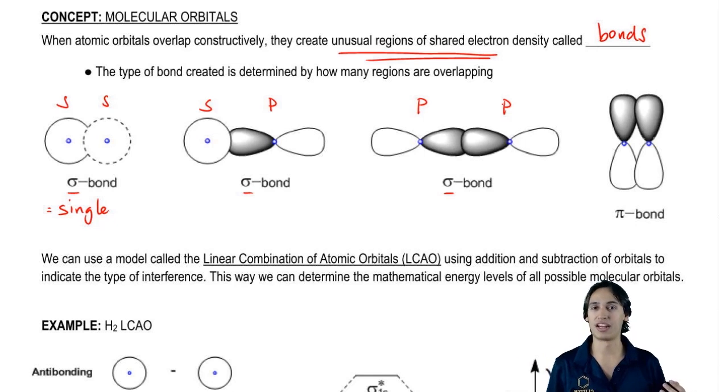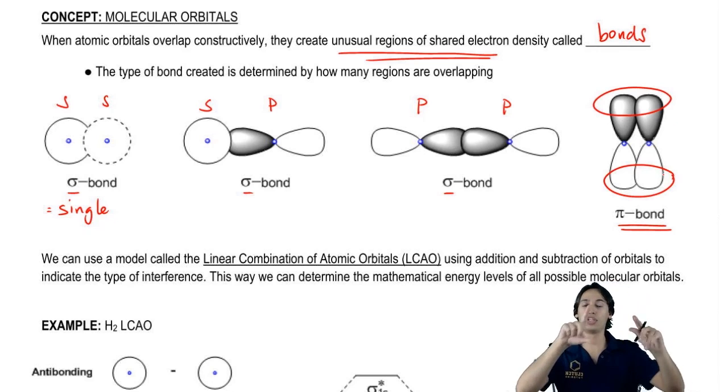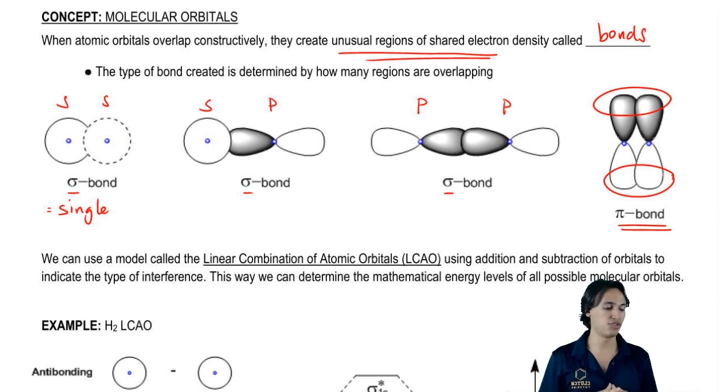Now, another type of bond is one that has more than one region of overlap. That would be, for example, a pi bond. In fact, it has two regions of overlap from two p orbitals coming together. As you can see, there's a region at the top and a region at the bottom.